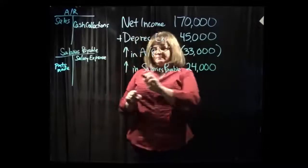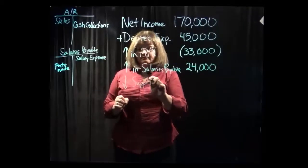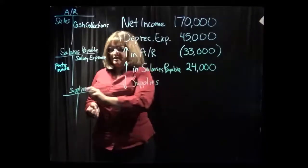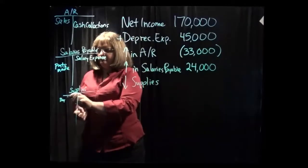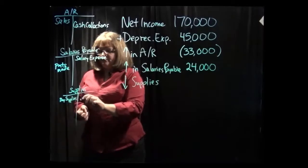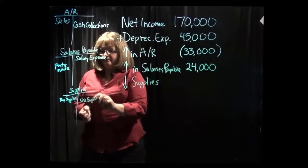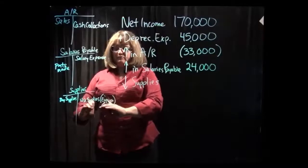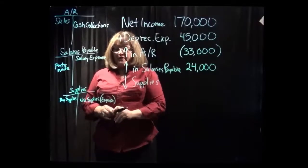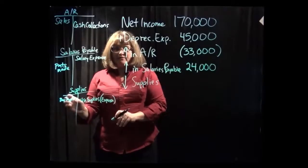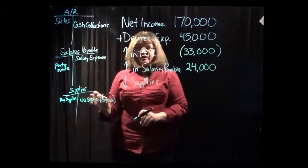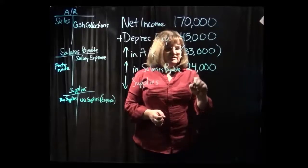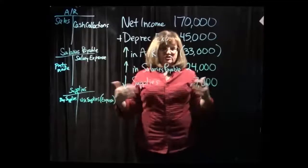Next we're given the fact that supplies decreased. Supplies is an asset account — it increases when we buy more supplies and decreases when we use the supplies, which is when we record supplies expense. Since the supplies account went down, we know that we used more supplies than we actually bought. That means we had supplies expense that resulted from using up supplies purchased in another period, so they didn't have a current cash outlay associated with them. We are going to add that decrease in supplies, which was $7,000, because we didn't have to pay cash out for some of those supplies that we used.